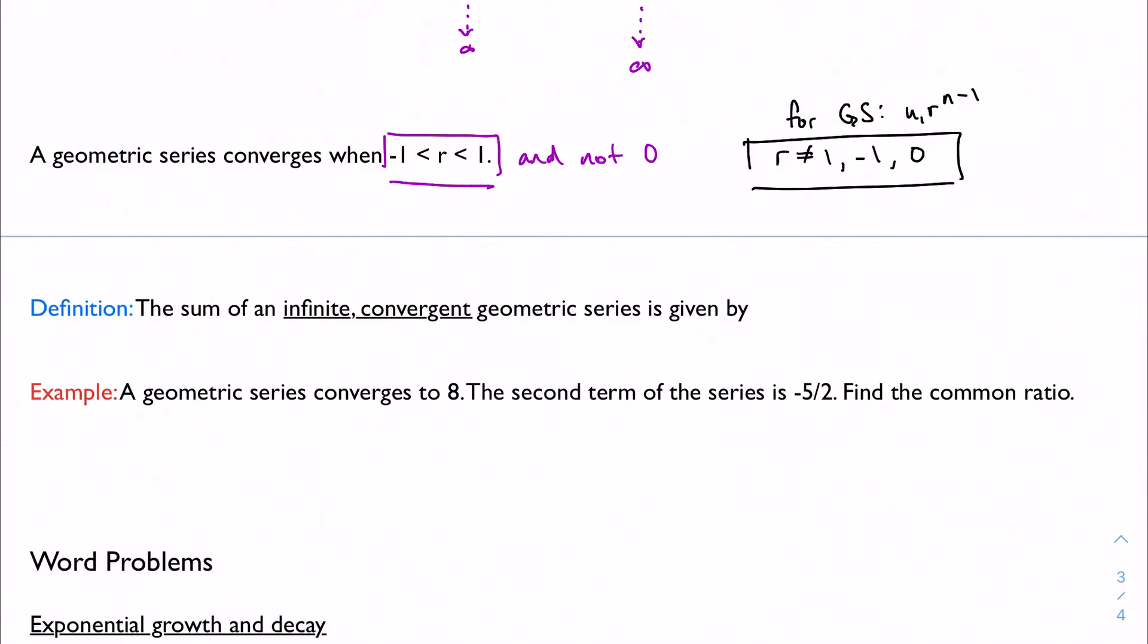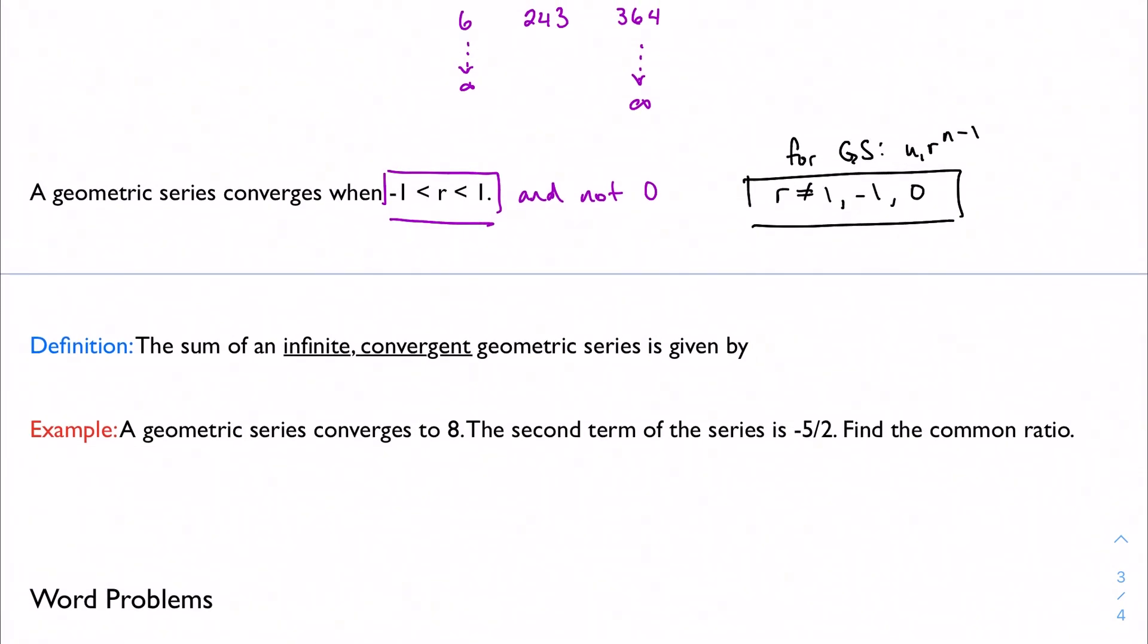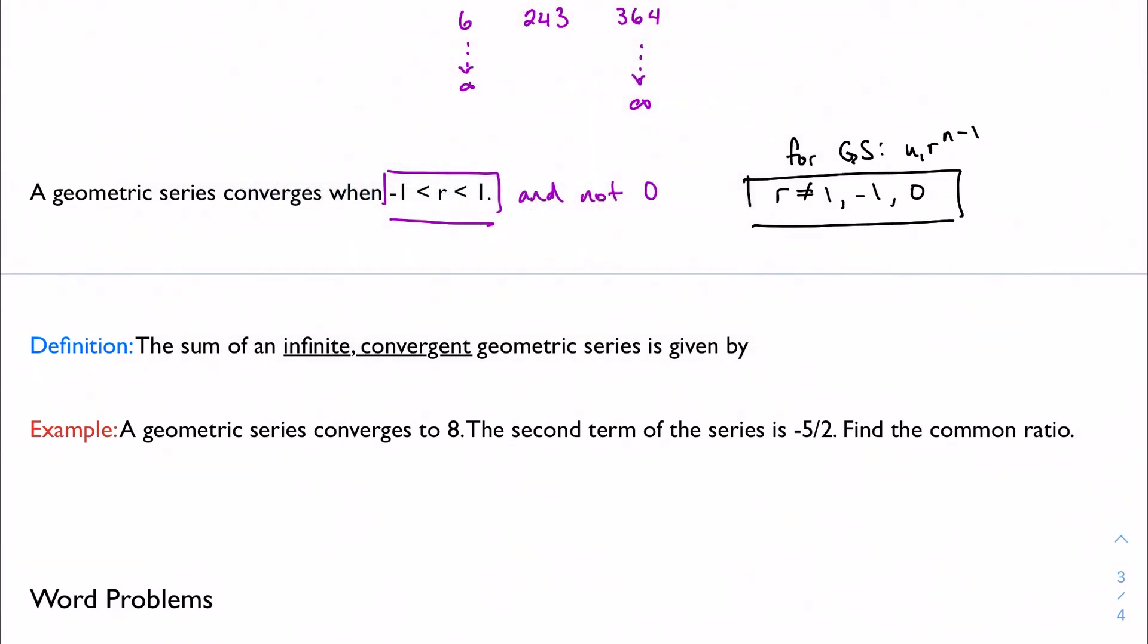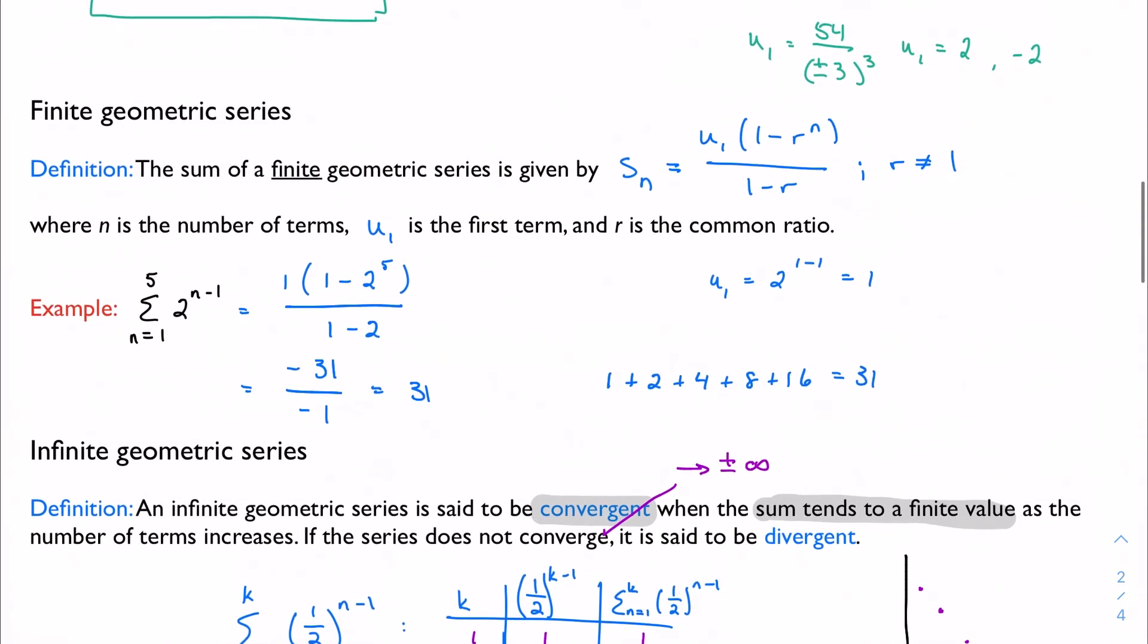When we have an infinite convergent series, we can find what that converging point is, that number that the series converges to. We can find its sum. The formula for a convergent series is much simpler than the one for a finite, just general finite series. We say that the sum, and sometimes you'll see it with the little infinity, just to say that it's an infinite sum, is just the first term divided by 1 minus the common ratio. That's it. That's all. Much nicer than our friend up here.